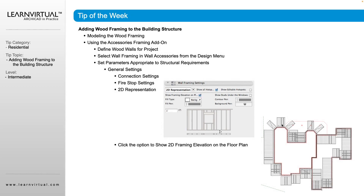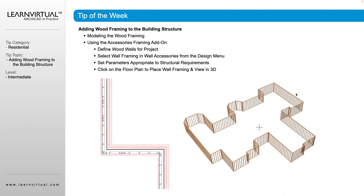If we have a 2D representation for the wall framing, we only want that showing when we're in a structural plan. Make sure the wall framing is on a structural layer versus a generic exterior wall layer. By selecting any of the new framing that was placed, we can view it in 3D. In floor plan, we see our headers and columns — all of the framing is graphically placed into the wall.